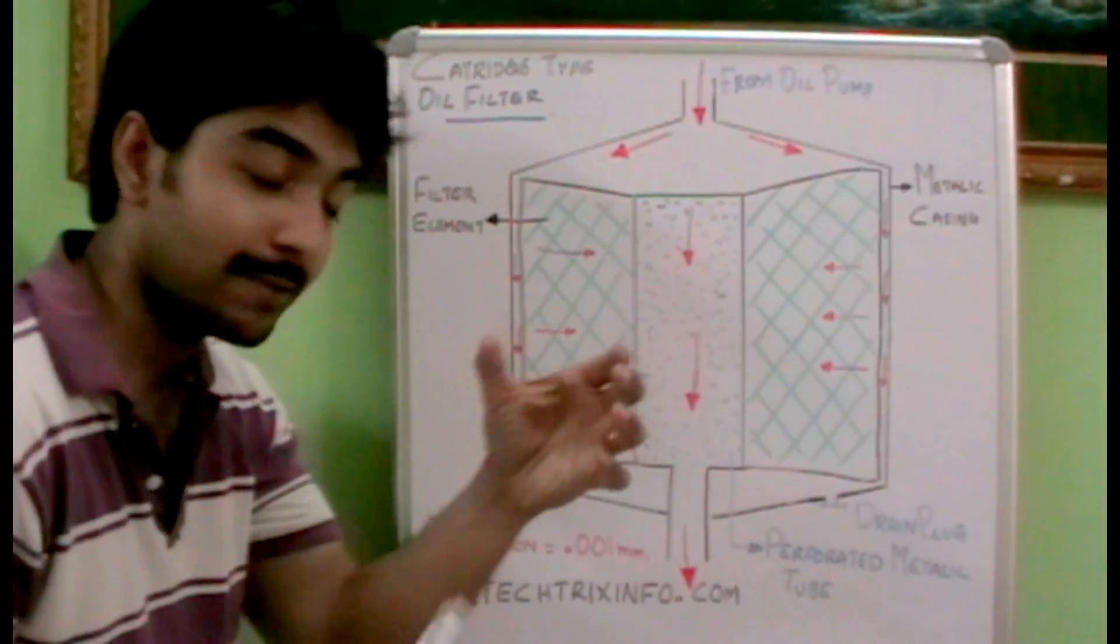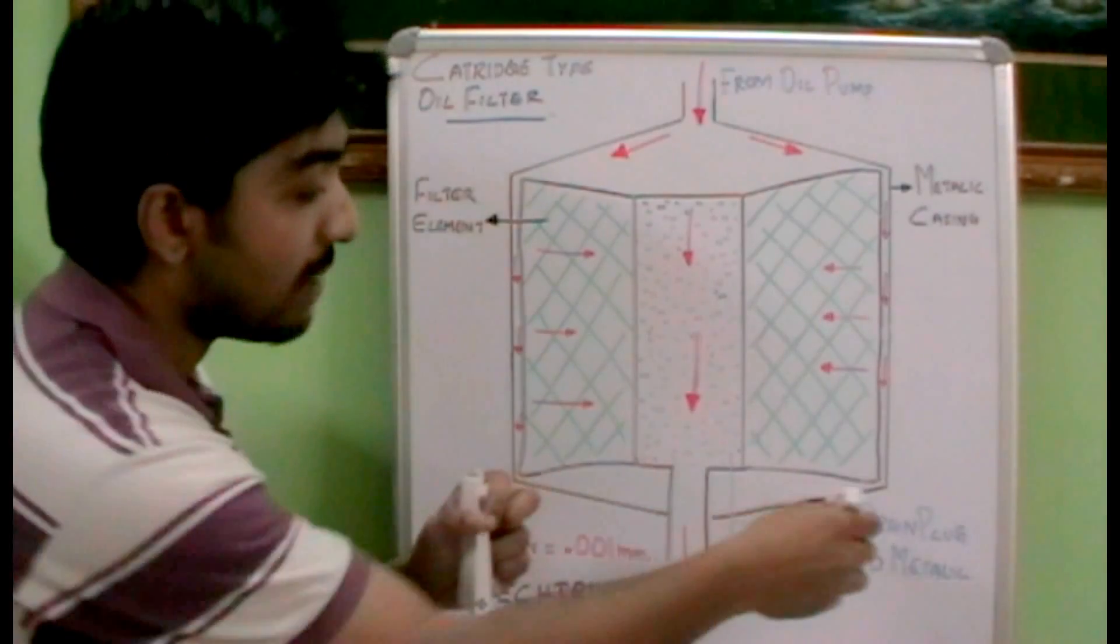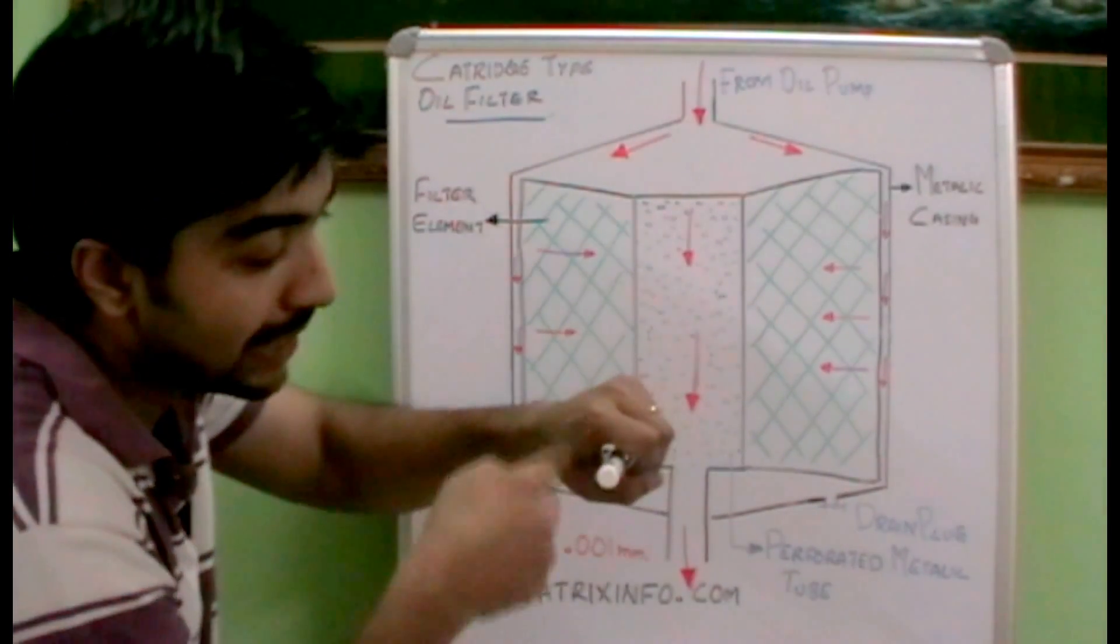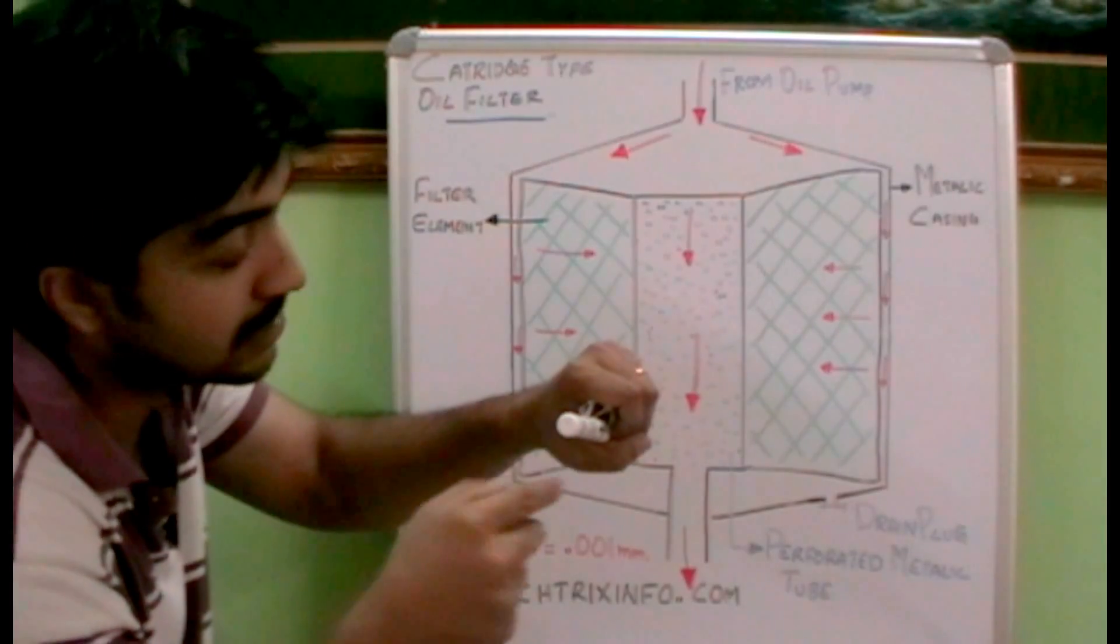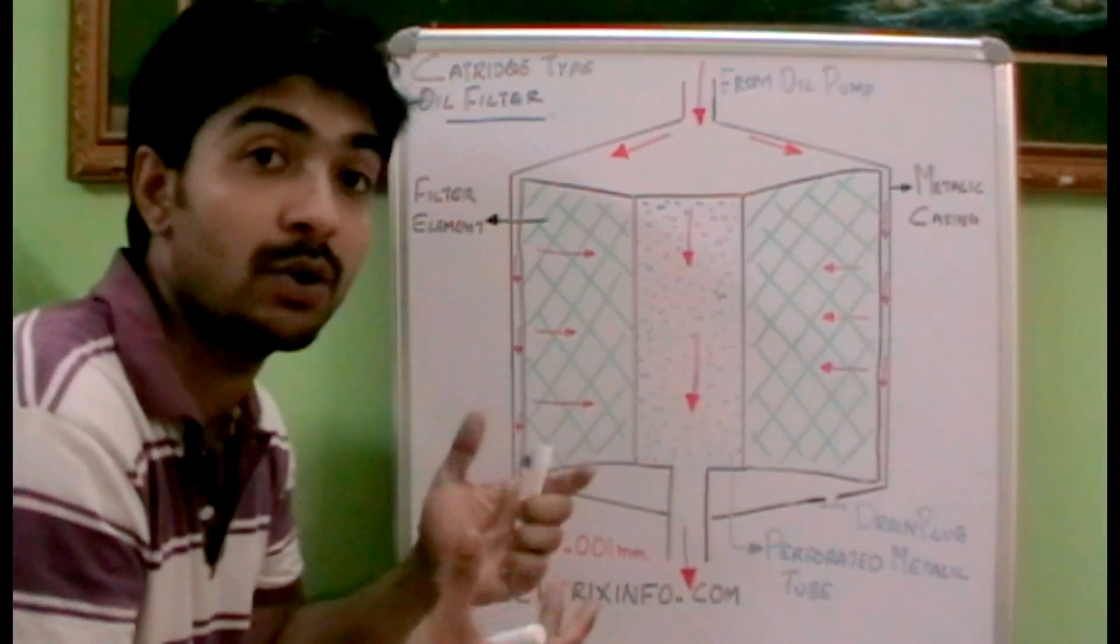So if we consider this as a metallic casing and we have the pleated paper inside like this, and we have this perforated metallic tube at the center, it will be exactly like this. So what happens is that when it is pleated, the area of contact increases, so the filtration also increases.